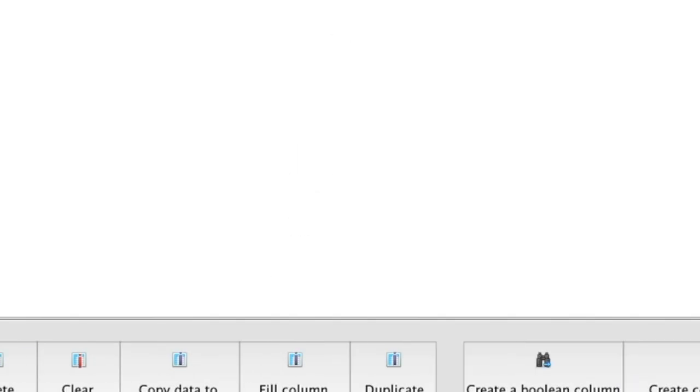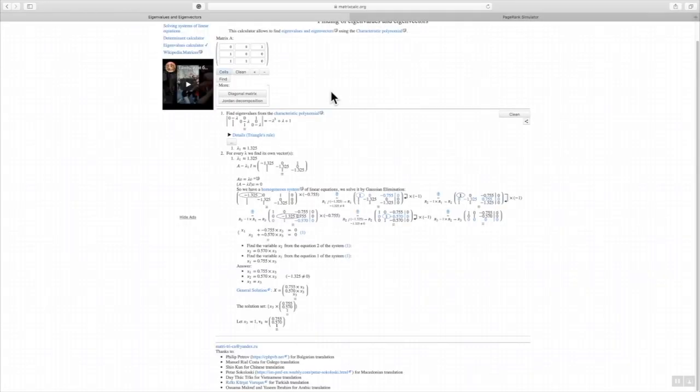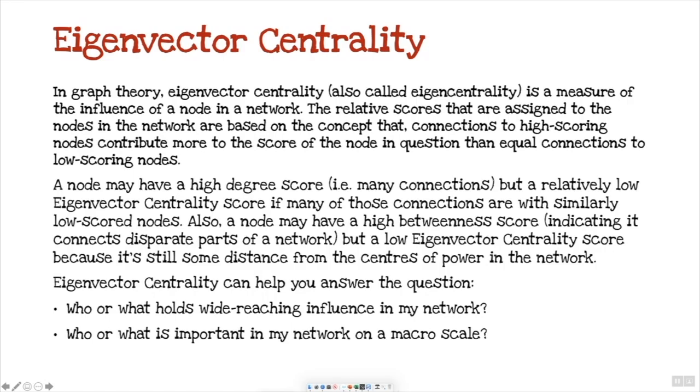If I go back and just remind ourselves what eigenvector centrality is: in graph theory, eigenvector centrality, also called eigencentrality, is a measure of the influence of a node in a network. The relative scores that are assigned to the nodes in the network are based on the concept that connections to high-scoring nodes contribute more to the score of the node in question than equal connections to low-scoring nodes.